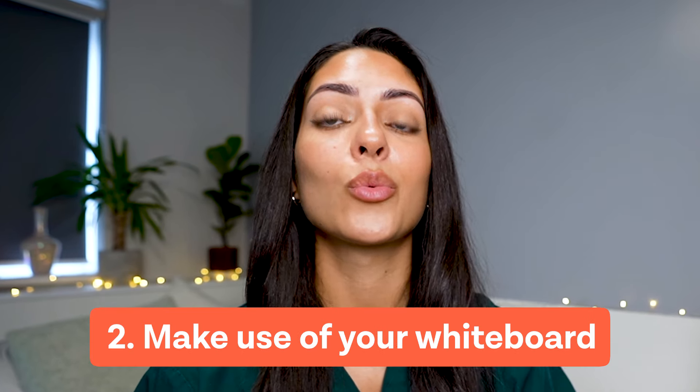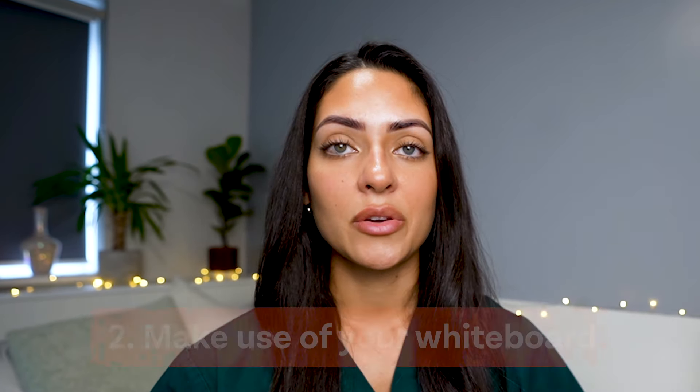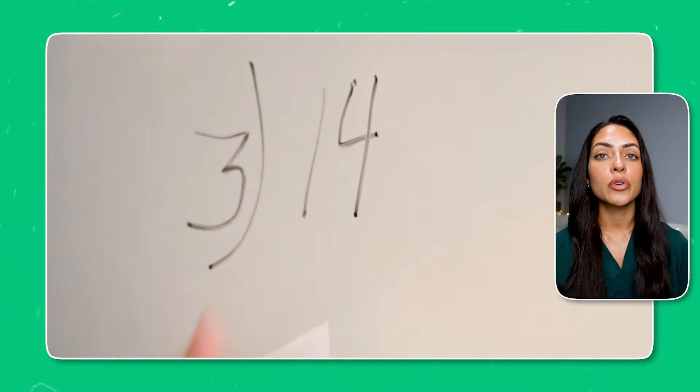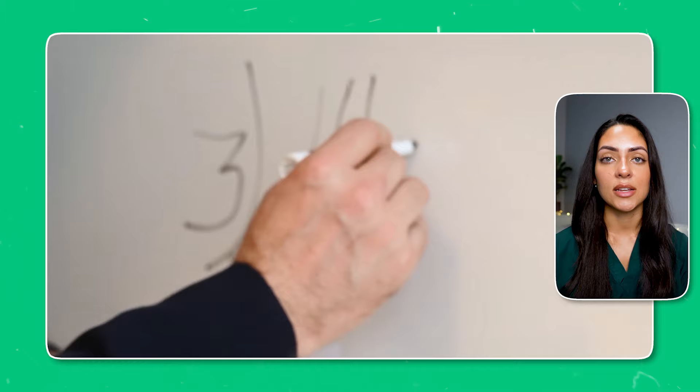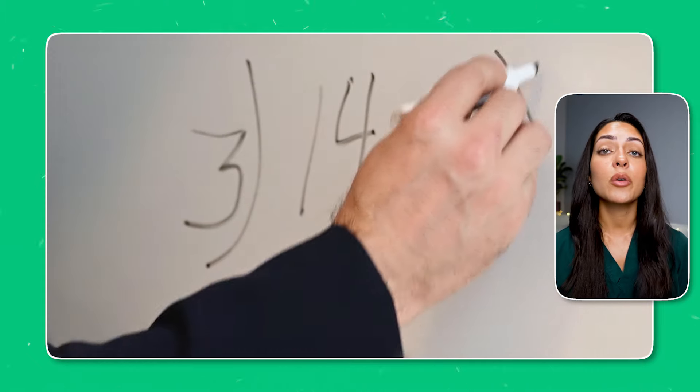Tip number two is to make use of your whiteboard. For this section of the UCAT you will be able to use an online calculator as well as a whiteboard. These can be helpful for questions that require you to make calculations or draw things out to visually represent data. Make the most of these when you need them, but be careful not to overuse them as sometimes you could end up wasting more time than necessary.